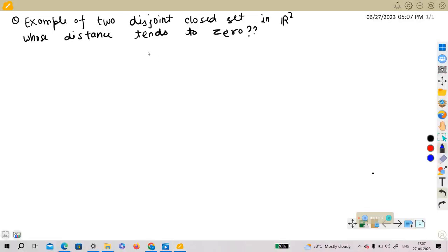Okay, we have a problem here to give an example of two disjoint closed sets in R² whose distance tends to zero. This means they are disjoint, but their distance is zero.